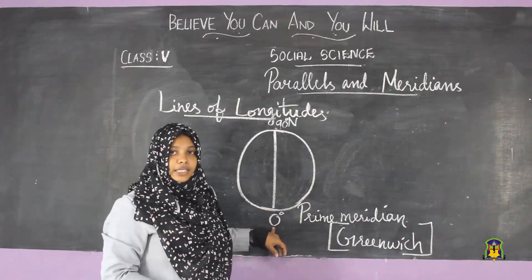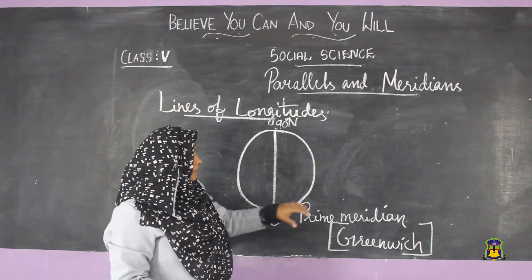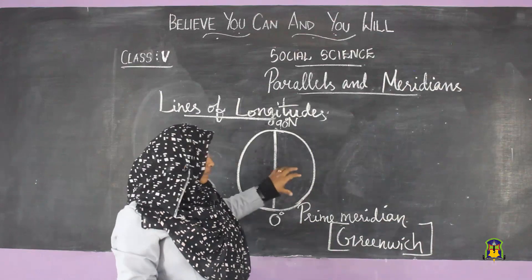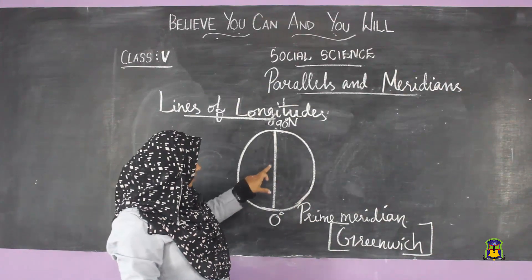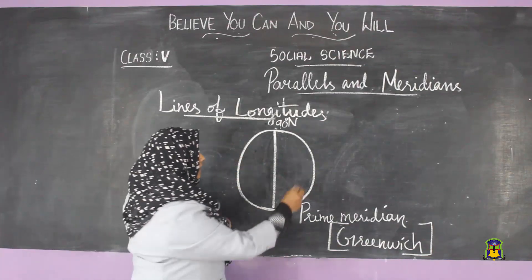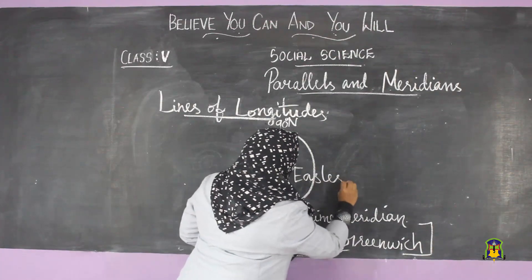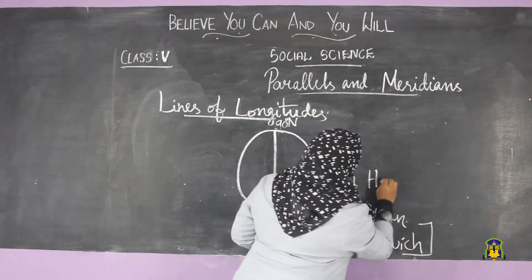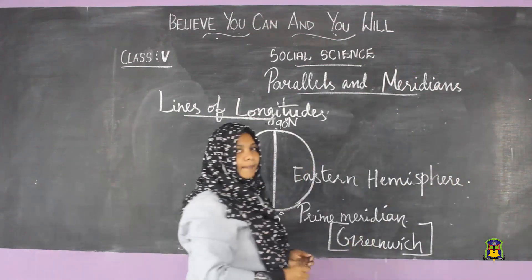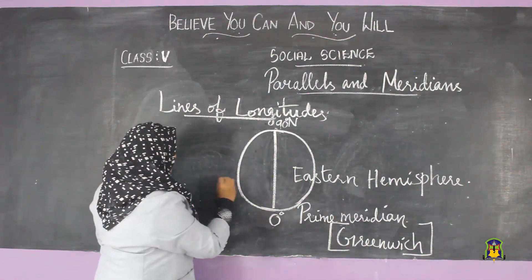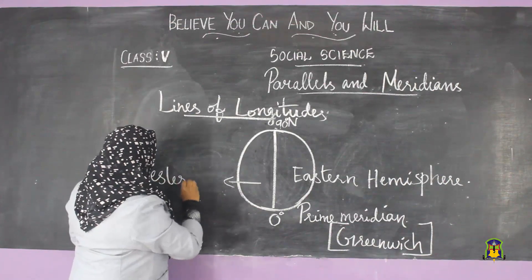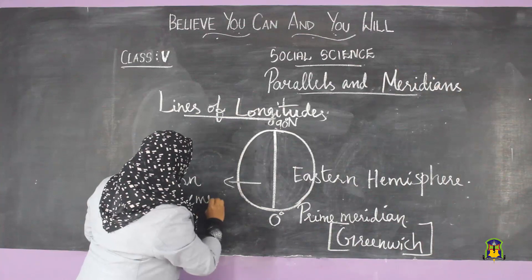The prime meridian is marked as zero degrees and divides the earth into two equal parts: the eastern hemisphere and the western hemisphere.